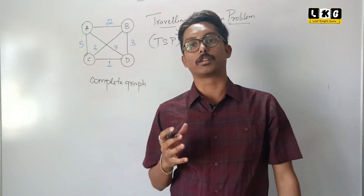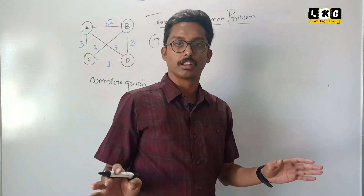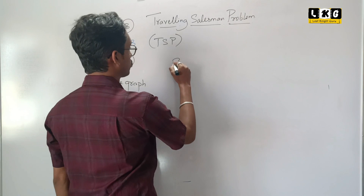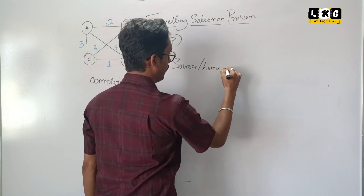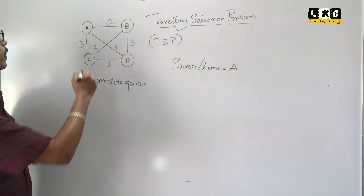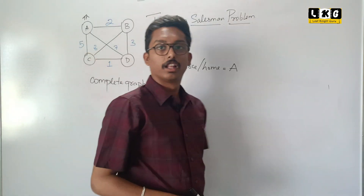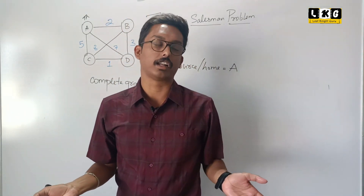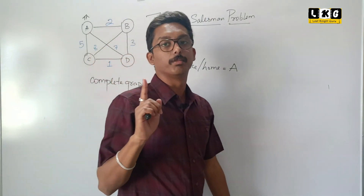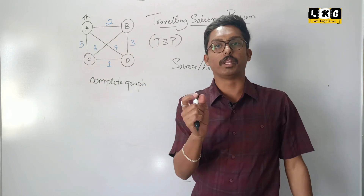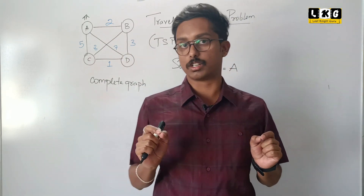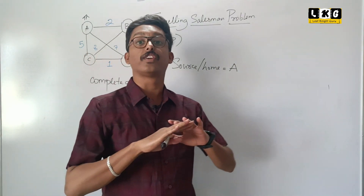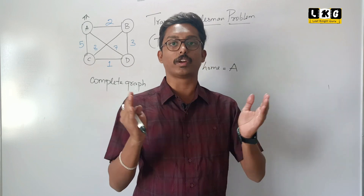Let us understand what is the problem statement of this traveling salesman problem. The problem statement is very simple. There is one salesman — let us say his name is X. He wants to travel from his home. Let us take the source or home as node A. From his home, he needs to travel to every other city and then return back to his home. In order to travel to all the cities, the cost should be minimum. That is, we need to find the optimal solution. So first we are going to find out all the feasible solutions, and then out of all the feasible solutions, we are going to find the optimal solution.